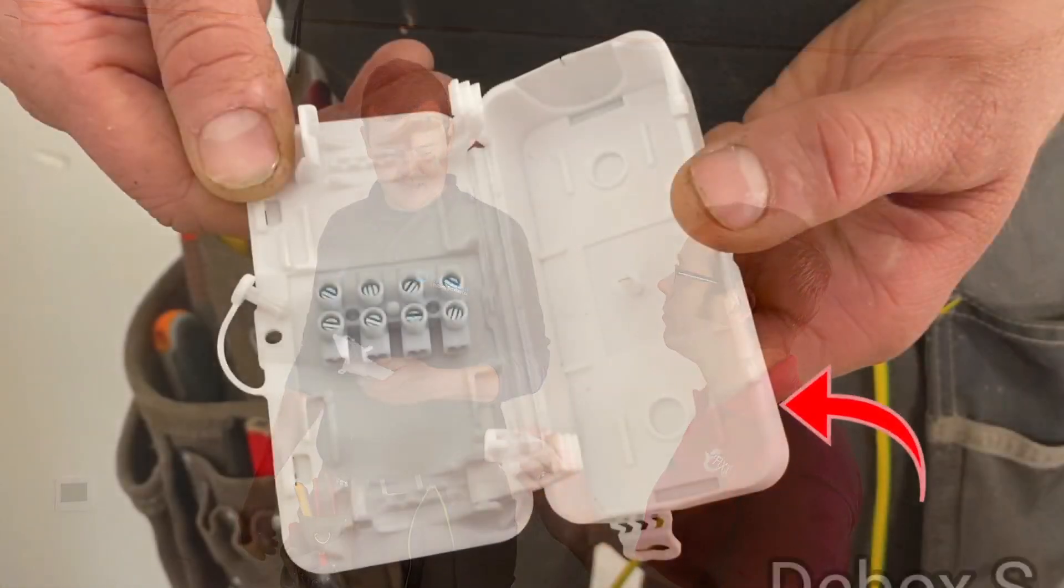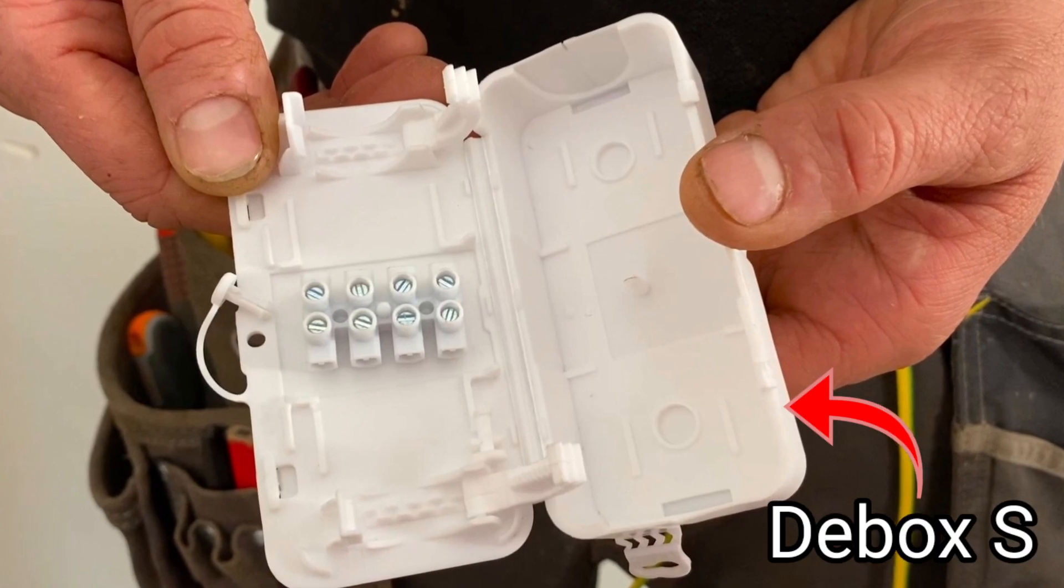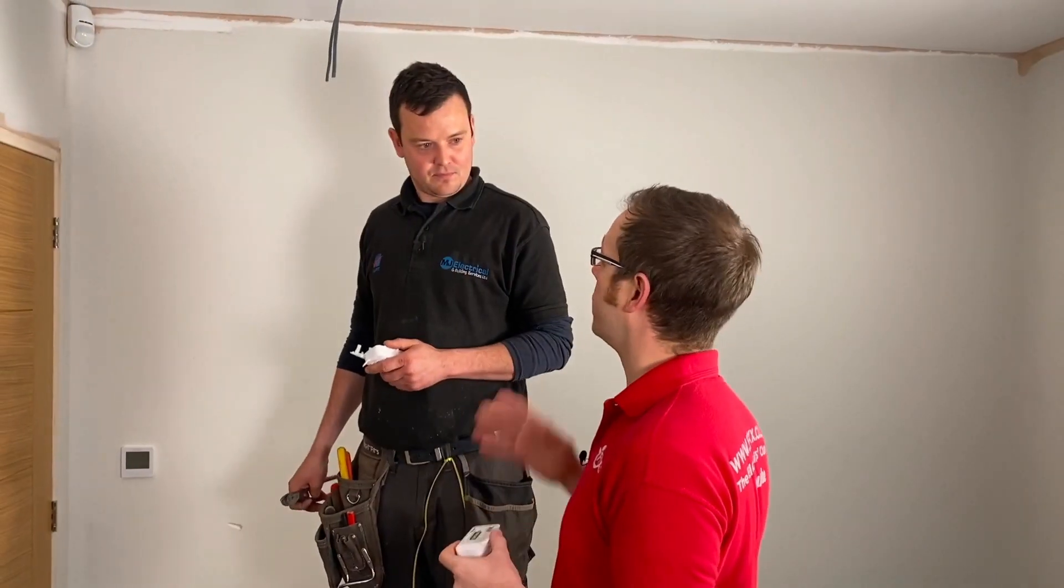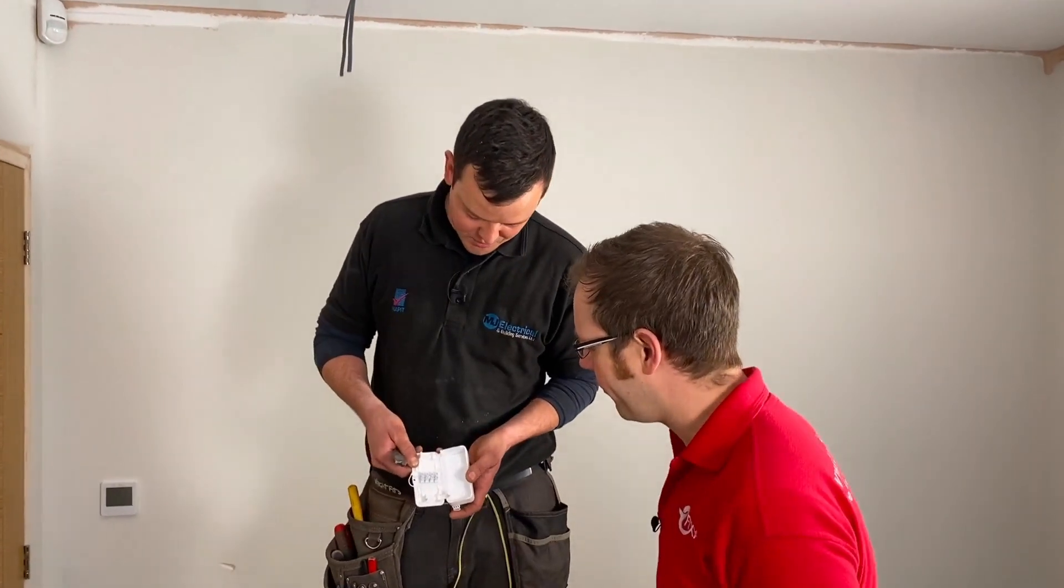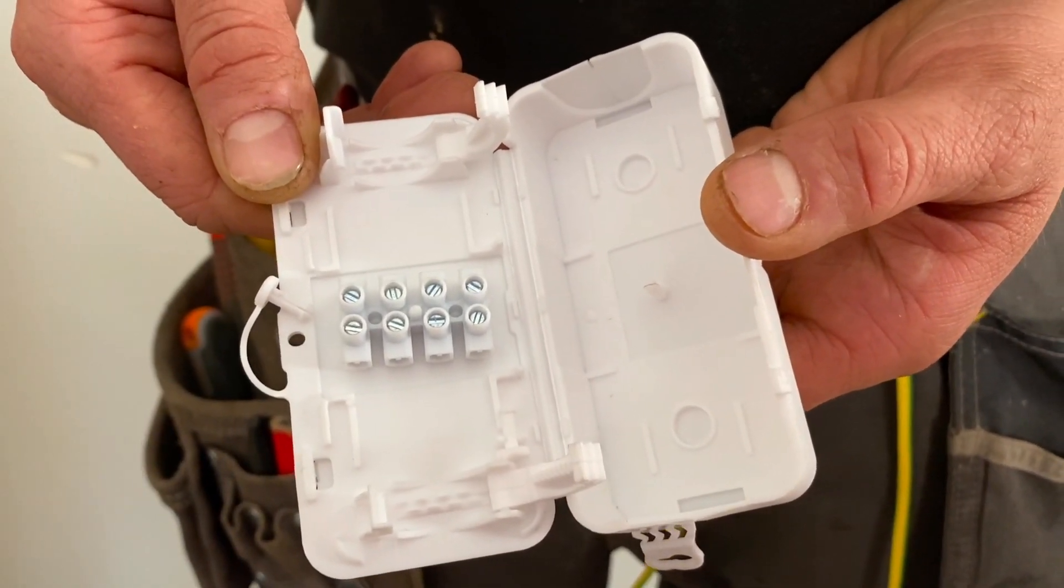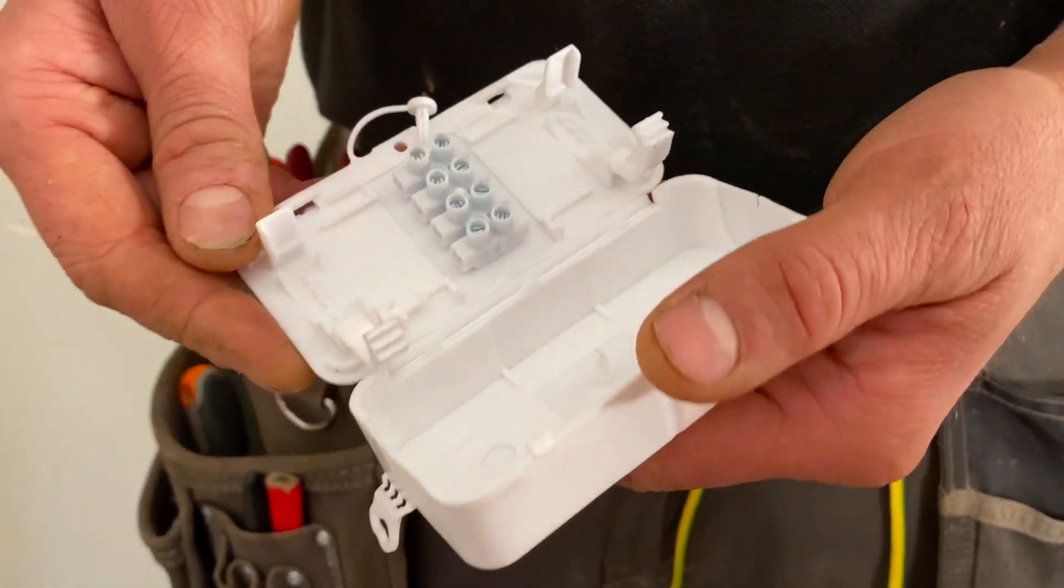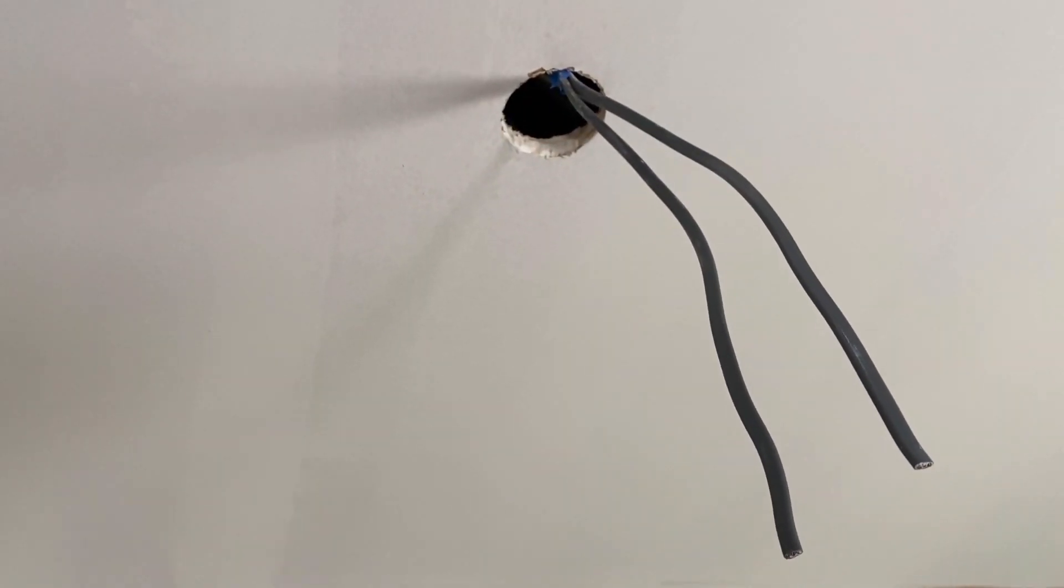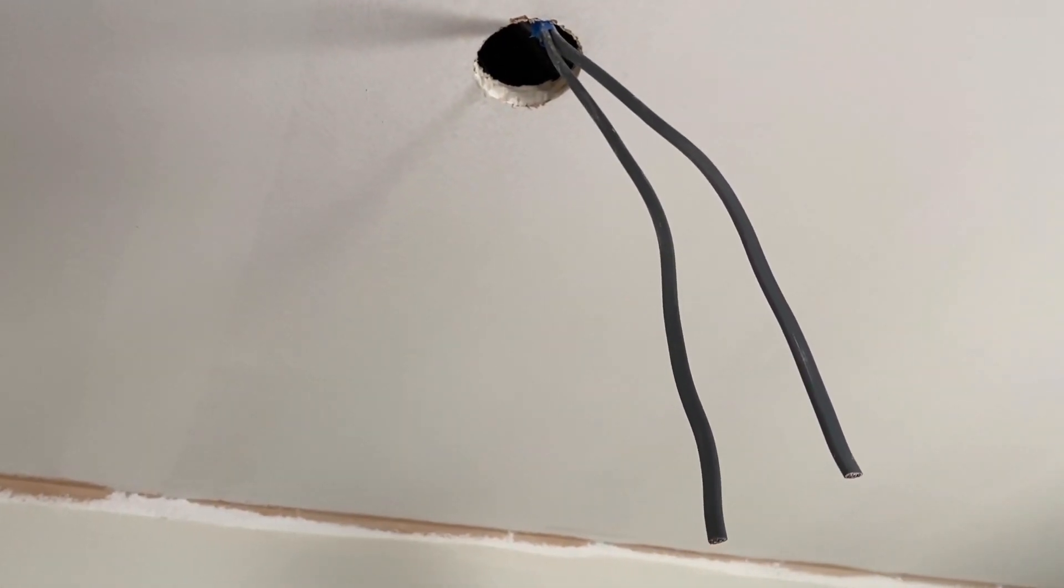This is the first of a few different types of this junction box that we're going to be installing. What are the connections like inside? We've just got a four-way connector block. This is a screwed type. A perfect situation because we can terminate the cables into that junction box, pop it up into the ceiling, and fit the spotlight. Let's crack on.